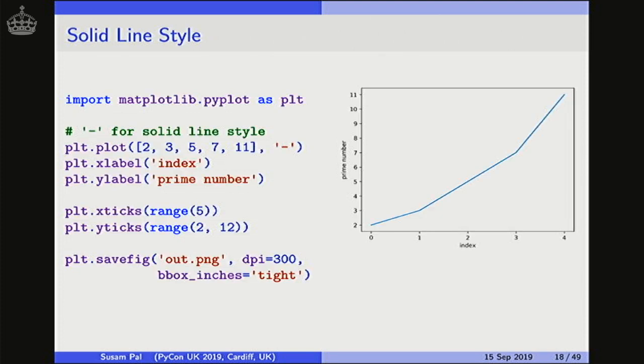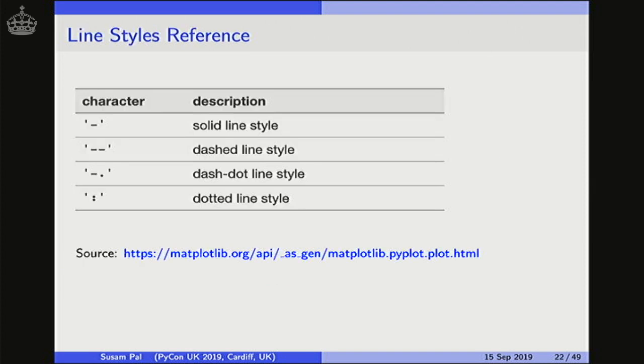There are only four line styles. So I will show you all four of them. Hyphen for solid line. We have seen this already. Double hyphen for dashed line. Hyphen and dot for dashed dot line style. And colon for dotted line style. This is the reference for all four line styles.